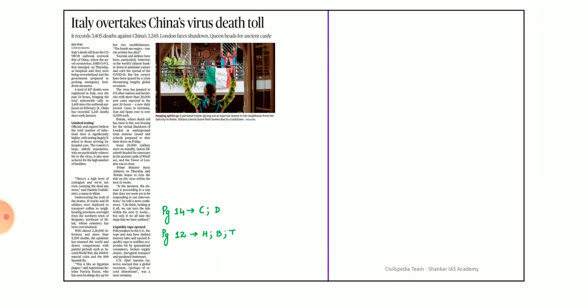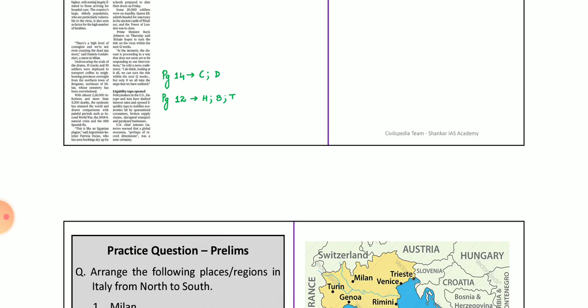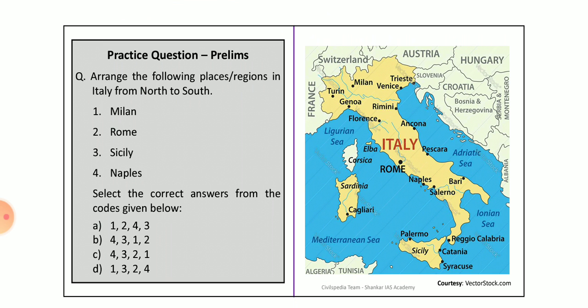The next article is related to Italy overtaking China's virus death toll. What is happening in Italy — Italy now has more deaths than China. Related to this is a geography question: we have to arrange the following places in Italy from north to south — Milan, Rome, Sicily, Naples. If you know Sicily is in the south, you can answer the question.